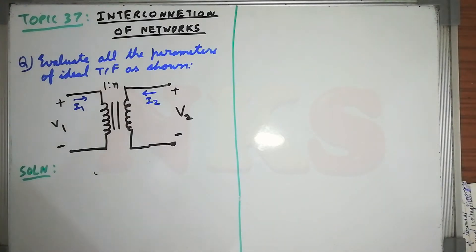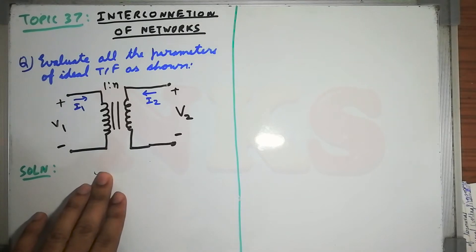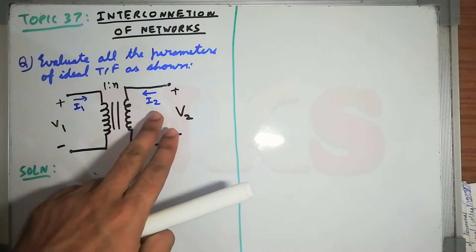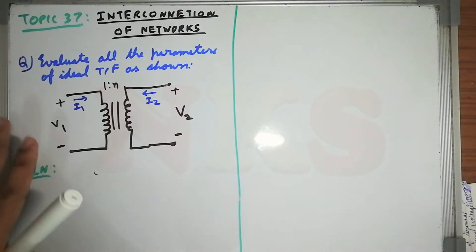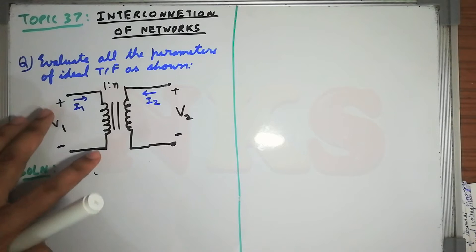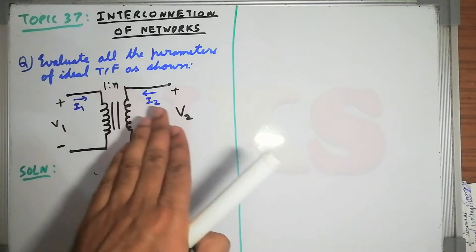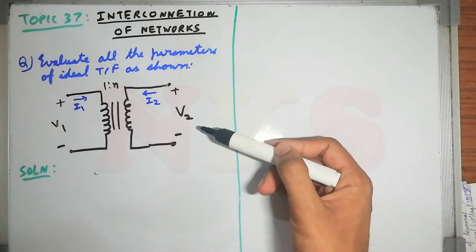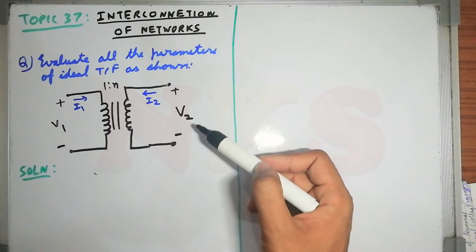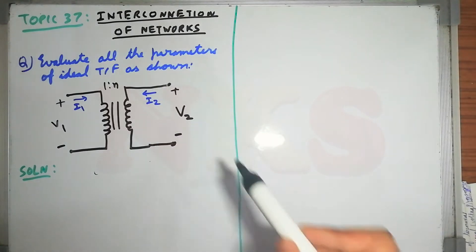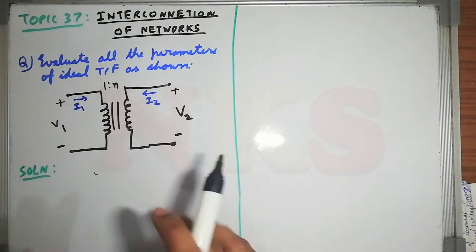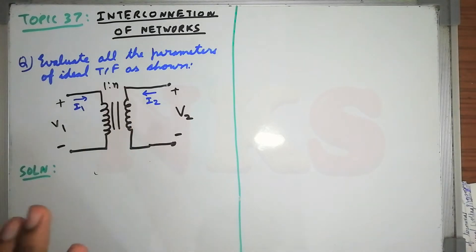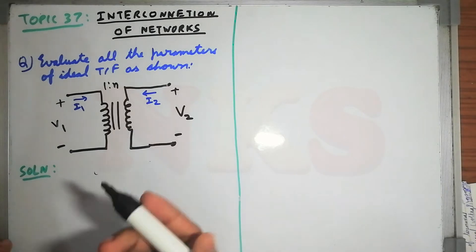Here we have to find all the parameters for this ideal transformer. Notice that the conventions for two-port networks are always the same: v1, i1 entering; v2, i2 entering. But usually in a transformer, the load is connected to the secondary side and the current enters into the load. In two-port analysis, we always take the conventions as shown, so we have to find the Z, Y, and all parameters.